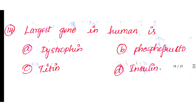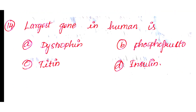Question number 14: Which is the largest gene in humans? Option A: Dystrophin. Option B: Phosphofructo. Option C: Dietin. Option D: Insulin. The answer is Option A: Dystrophin.